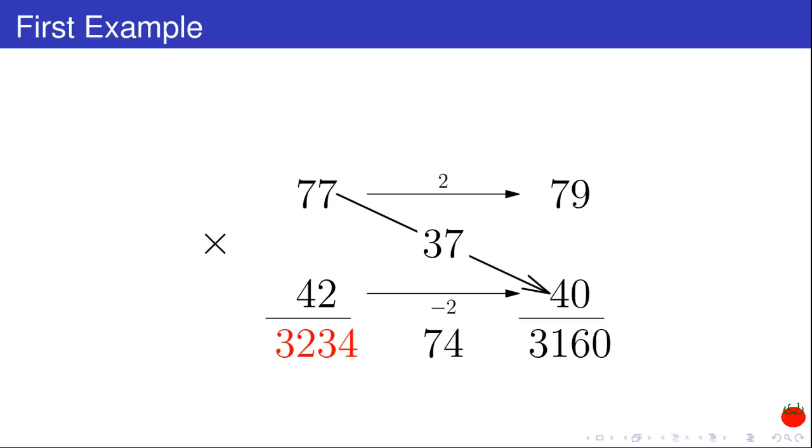Last step. I just add the two products. 3,160 plus 74 is equal to 3,234.